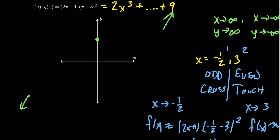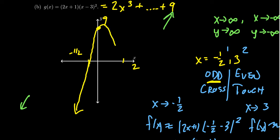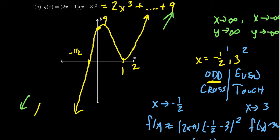We have an x-intercept at −1/2, an x-intercept at 3, and a y-intercept at 9. Starting at the y-intercept and moving left, we cross at x = −1/2 because it's odd multiplicity, and the end behavior goes down on the left. On the right side, approaching x = 3, we bounce off the x-axis — touching but not crossing — then come upward to match the end behavior pointing up on the right. This gives a graph with one crossing and one touching, consistent with two turns for a cubic function.